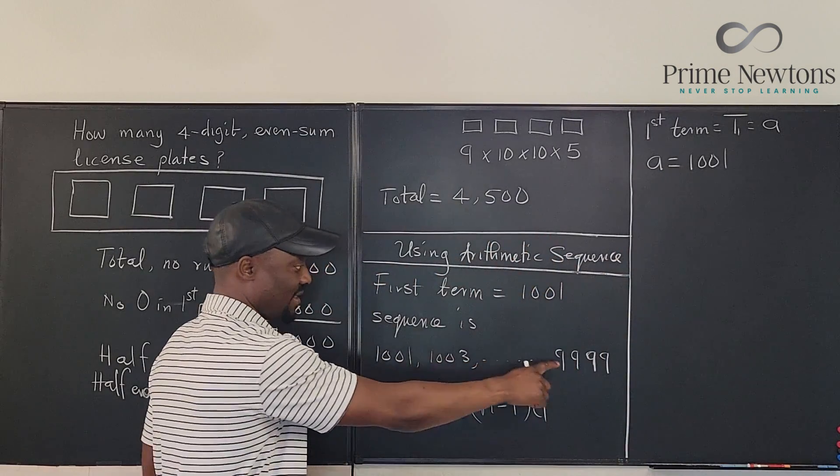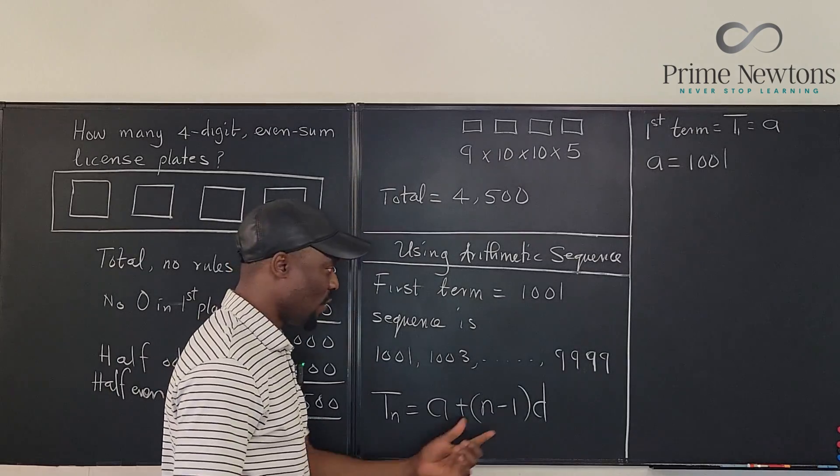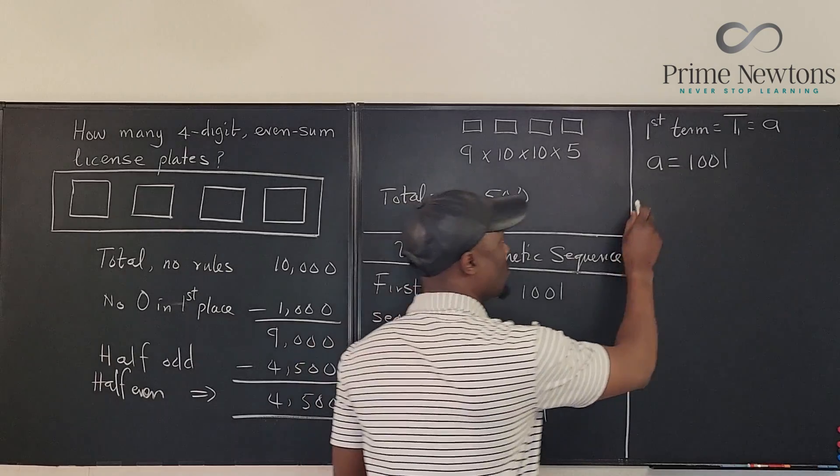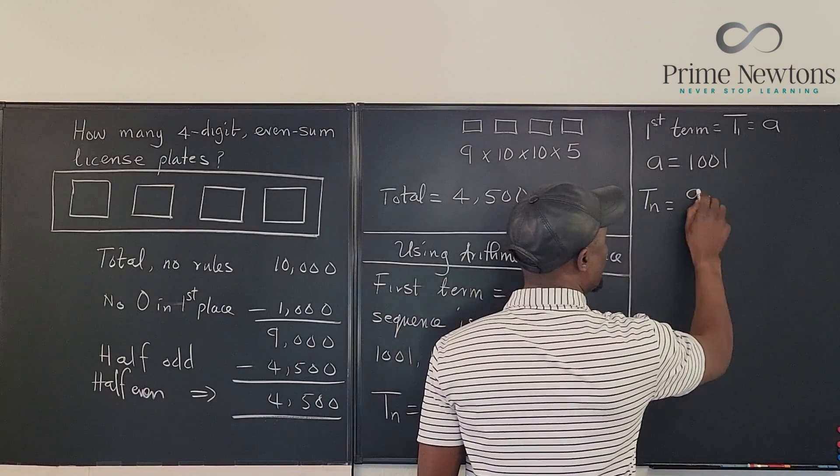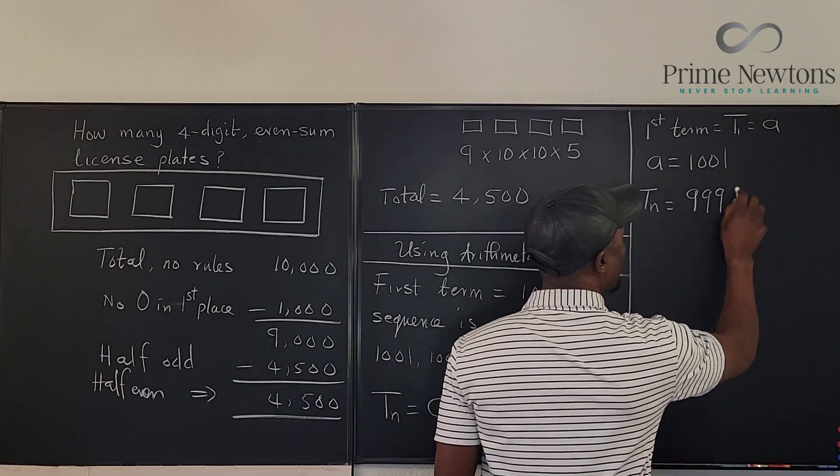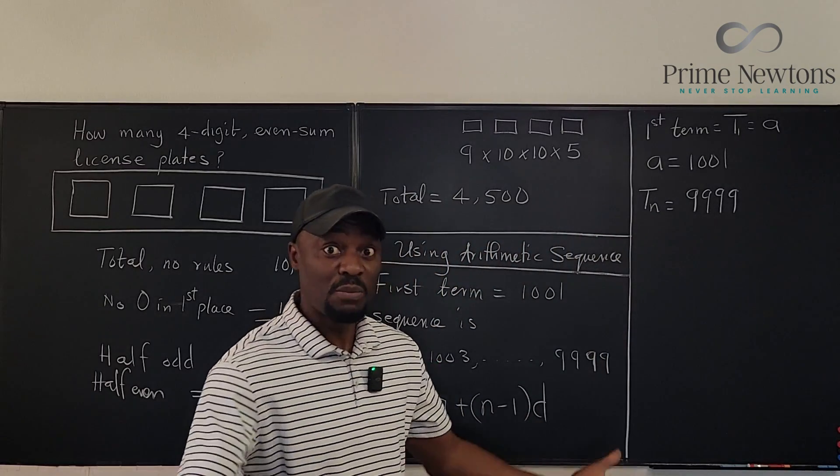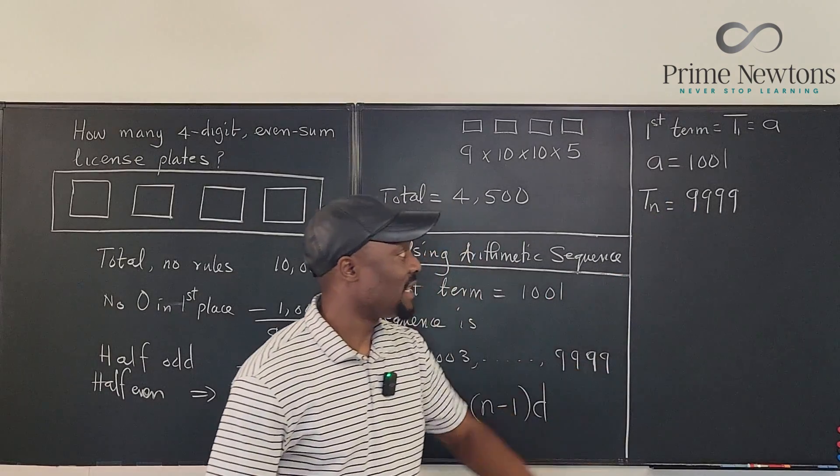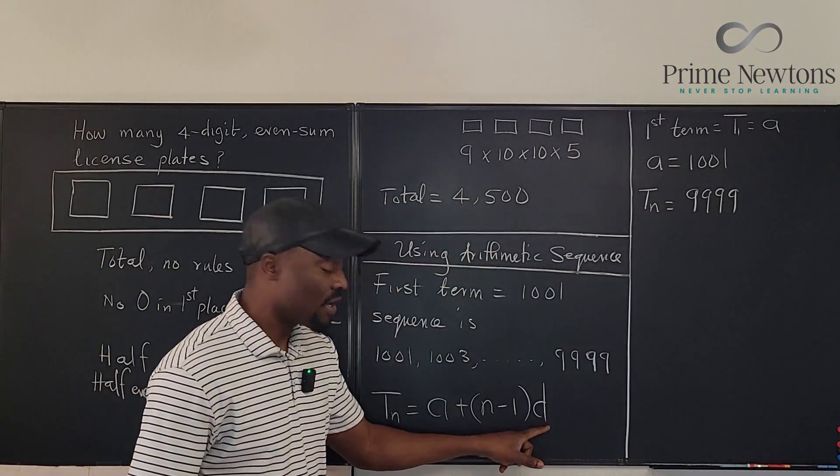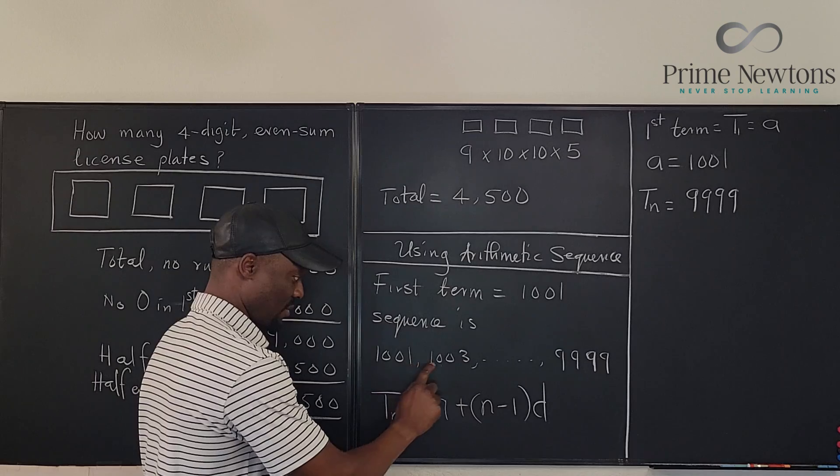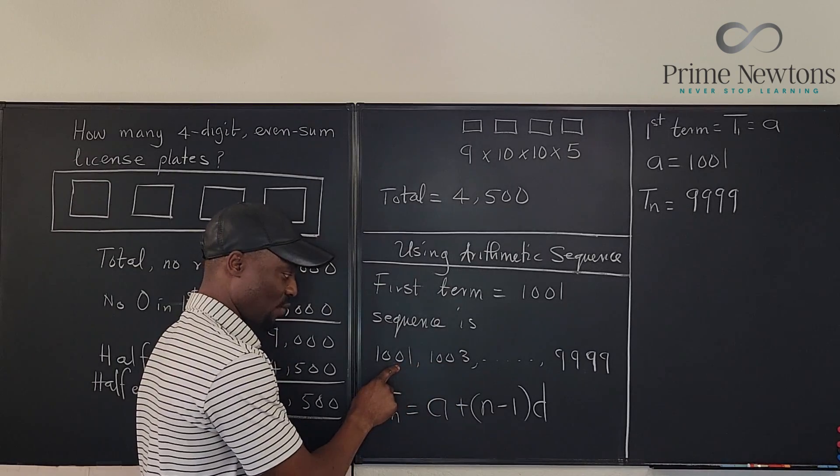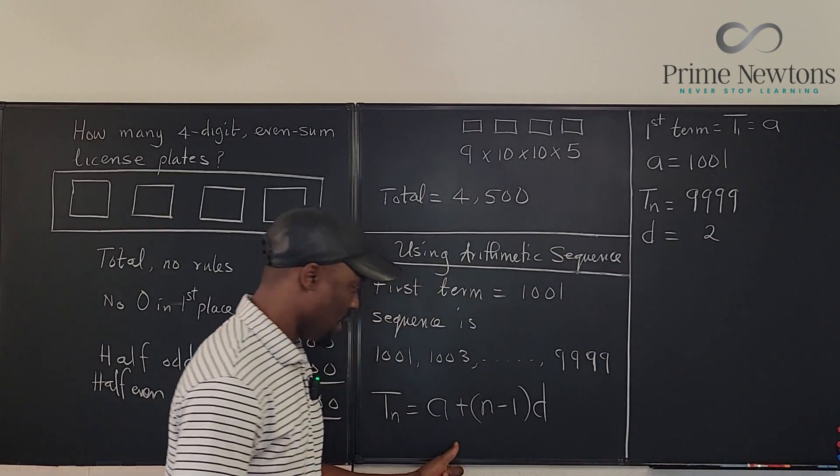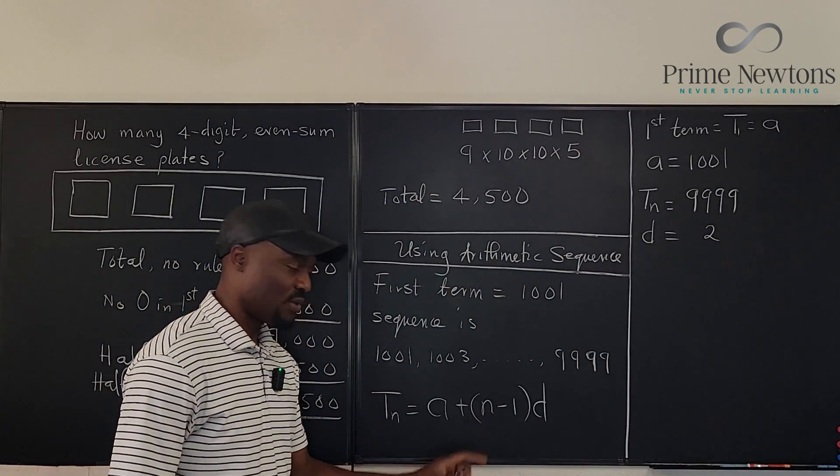In this case, we have a is 1,001. What else do we need? We're going to take this term. We don't know what the term is, but it is the nth term, which is the last term. So we call it tn. It's going to be 9,999. We just don't know what this n is, which is the number of terms, which is the number of license plates we're actually looking for. So tn is 9,999. What else do we not know? The common difference. What is the difference between this number and this number? We added 2. So every time you're going to be adding 2, d is equal to 2. So we're going to go back and use this formula and find what n is.